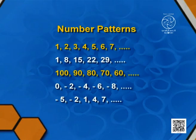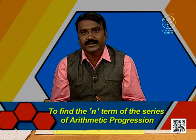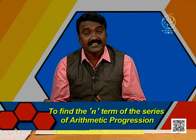The next pattern starts from minus 5, becomes minus 2 — so plus 3 is added — then becomes 1, with 3 added again. The common difference is 3. If we want to find the 100th term of this series, we can do it by adding 3 to each term, but it takes a long time. So we need a formula. Today we shall perform an activity to find the nth term of an arithmetic progression.